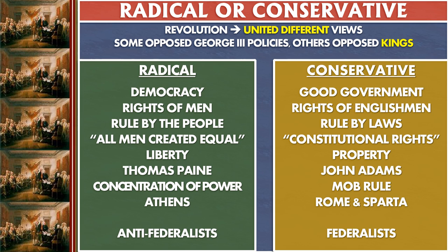So why do we have a revolution? The revolution united people who had very different views about government and justice and their vision for society. The uniting factor was opposition to the policies of George III — and there was more than one way to be opposed. You had radicals who wanted to change society and conservatives mostly concerned with poor government under George III. Some opposed particular policies; others were opposed to the very idea of monarchy. Conservatives wanted to keep many aspects of the English system of government, which was somewhat democratic, while radicals wanted to change society wholesale.